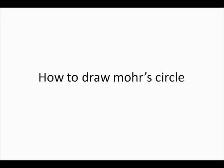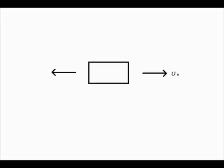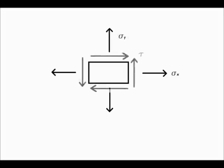Hello friends, in this video I am going to show you how to draw the Mohr circle. Let us first assume a body which is being acted upon by various stresses. Let there be a stress in the x-direction, that is sigma x, and a stress acting in the y-direction, that is sigma y, and let there be a shear force acting on the body, that is tau.